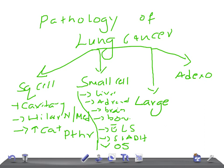Large cell carcinoma is peripherally located. It can metastasize to different areas of the body and may also have cavitation, though this is not very common, so fewer exam questions focus on it. If they give peripheral location with cavitation, think large cell carcinoma.